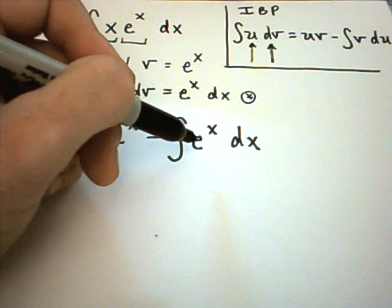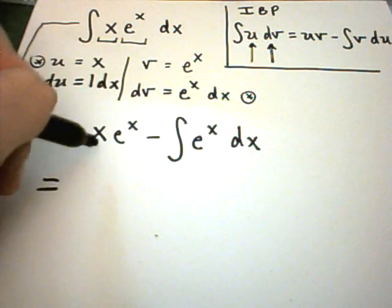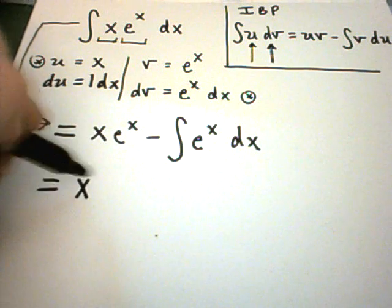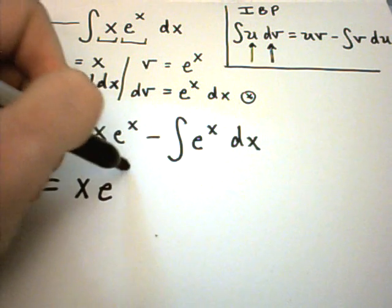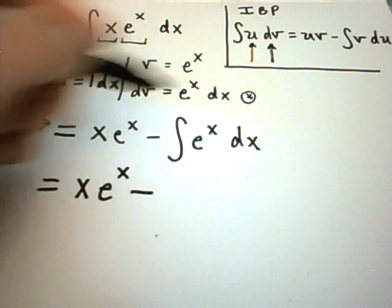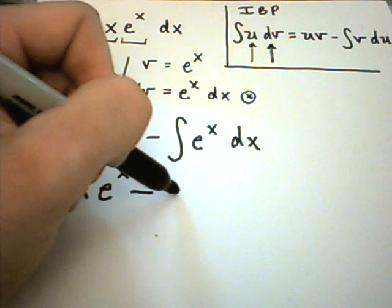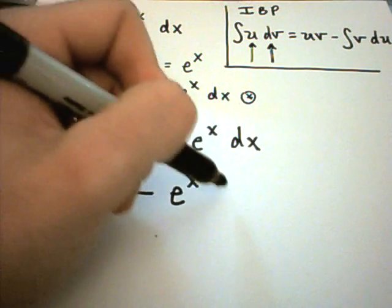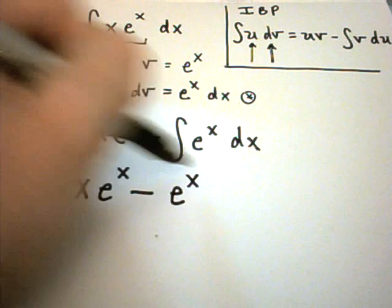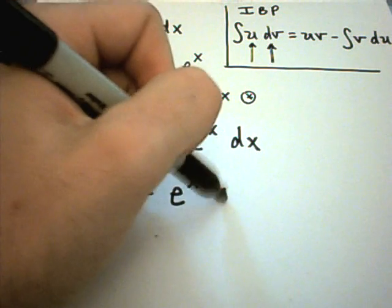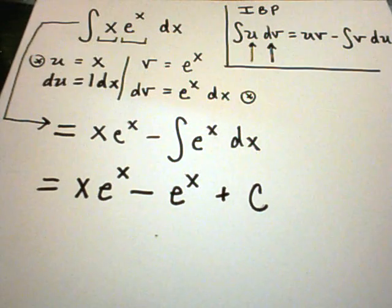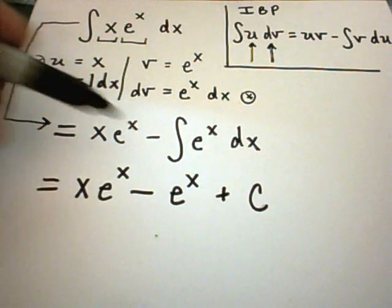In this case, I can certainly integrate e to the x. So my x e to the x from the first part just drops right down, minus the antiderivative of e to the x, which is just e to the x. Now that I've completed all the antiderivatives, I tag on my plus c. That's it, I found the antiderivative.